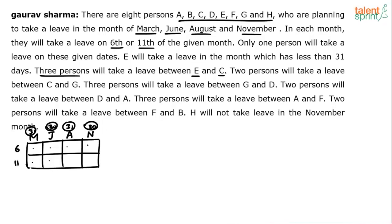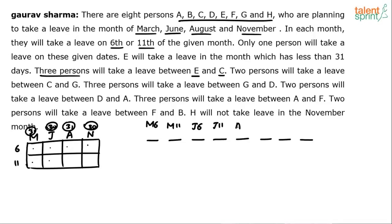There are two ways of solving such questions: either draw rectangular grids, or use a straight linear arrangement. In the linear approach, list all 8 positions in order: March 6th, March 11th, June 6th, June 11th, August 6th, August 11th, November 6th, November 11th. You can draw four straight lines for the four cases and fill up the gaps.